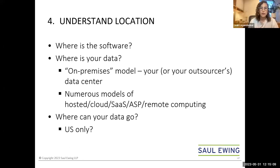In addition to understanding the license scope, it's equally important to understand the location. In a more traditional software licensing agreement, the software is installed on premise in the customer's environment — the customer can configure the software to meet its needs and retains control over its data. But when dealing with cloud solutions, which are increasingly overtaking on-premise software licensing, the software and the customer's data are going to be hosted by the vendor, often in a shared environment with multiple customers on the same server.